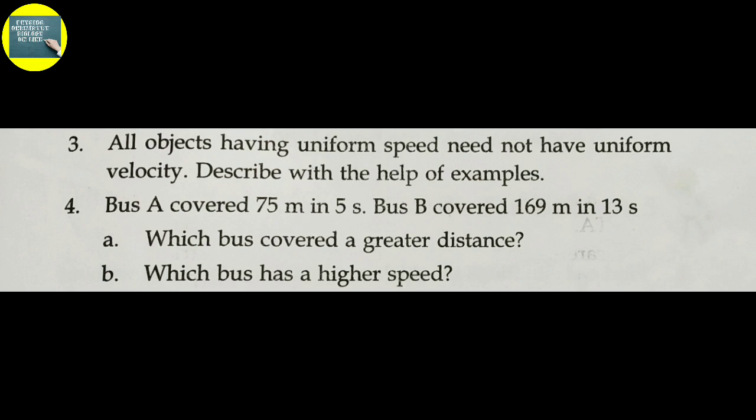Third question: All objects having uniform speed need not have uniform velocity. Describe with the help of examples. An object can have uniform speed while its velocity changes, because speed is scalar (magnitude only) while velocity is a vector that includes direction.